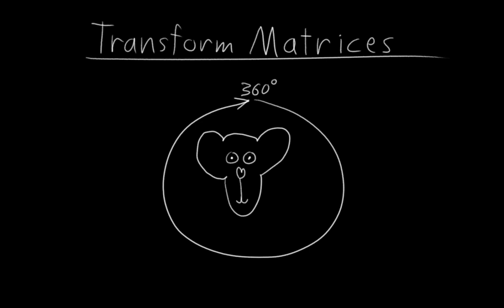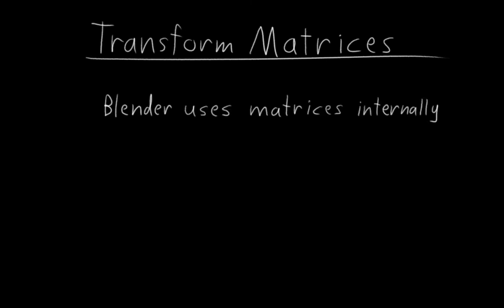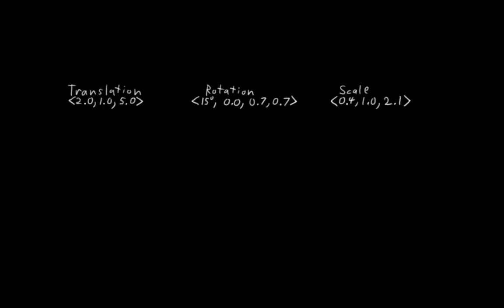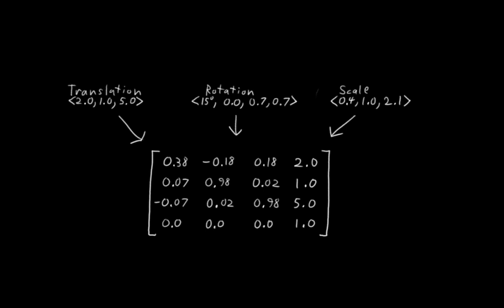I won't go into the math of transform matrices, but you should be aware that Blender uses them internally for representing and manipulating object transformations. When you as a user specify the location, rotation, and scale of an object in the end panel, or when those values are generated by animation, Blender actually converts them into a matrix for all of its internal object manipulations.